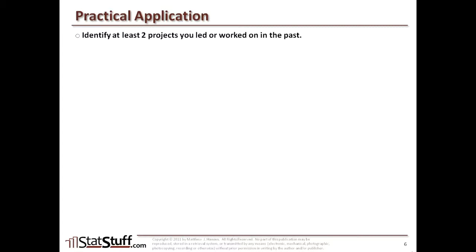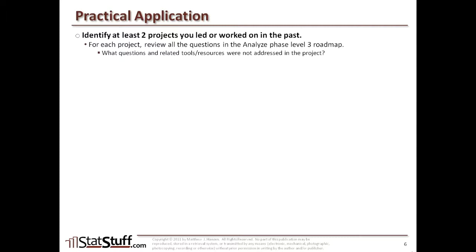Before closing, let's discuss how to apply these concepts practically. Try to identify at least two projects you've led or worked on in your organization. For each, review the questions through the third layer of the analyze phase roadmap and ask: what questions and related tools or resources were not addressed? Why were they not addressed? And what different outcomes could have been realized if those items had been addressed? Check out statstuff.com for many more resources. I'm Matt Hanson — thanks for watching.